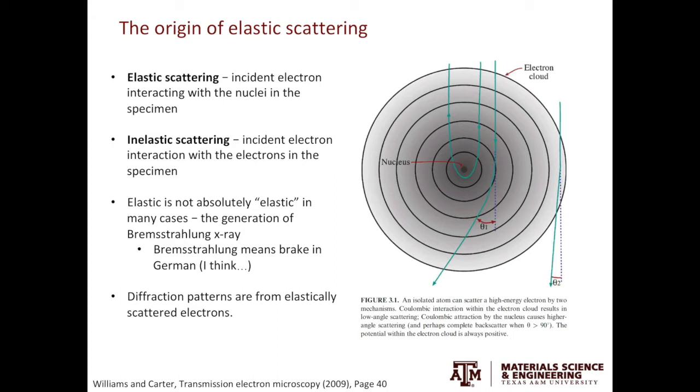Secondly, the elastic scattering are not absolutely elastic in many cases. The nuclei in the specimen can slightly slow down the incident electron beam, taking a small toll on their energy. The loss of energy is converted into X-ray, called Bremsstrahlung X-ray. Bremsstrahlung in German means brake, like you're hitting a brake in your car. The nuclei in the specimen is slowing down the incident electron beam as if it's hitting a brake.